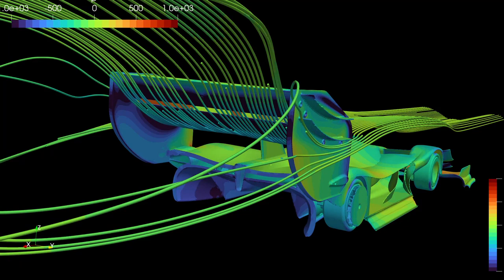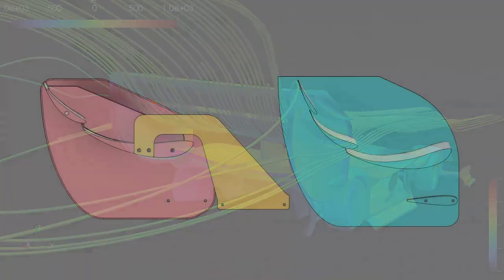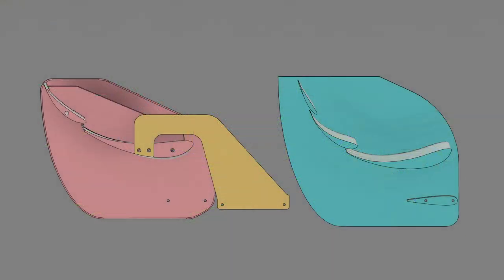So I fairly quickly arrived at a two element rear wing for a couple of reasons. First, the reason you use a multi-element wing in general is because you can generate more downforce in a smaller physical package. This is because the gap between the elements allows for the boundary layer to be re-energized with fresh air, which keeps the air attached at a much higher overall angle of attack between all the elements.